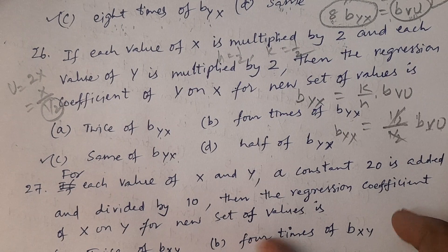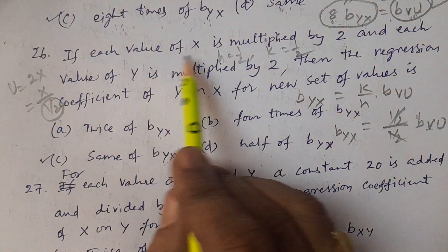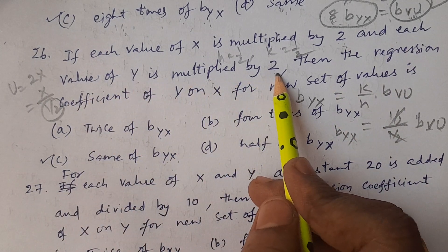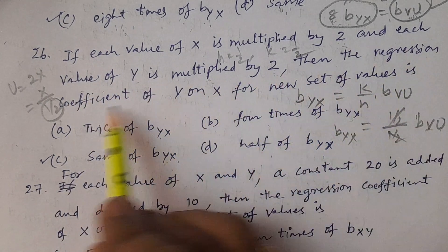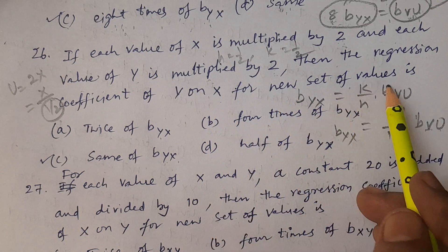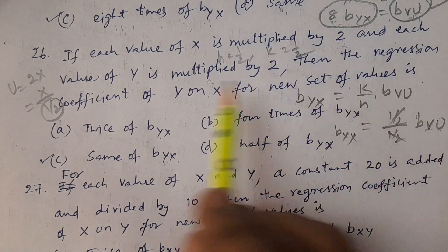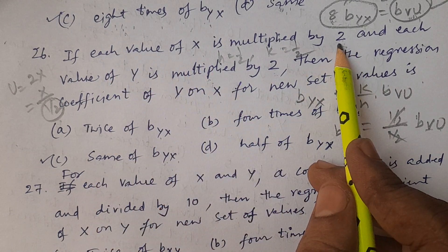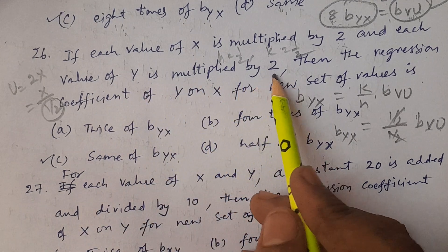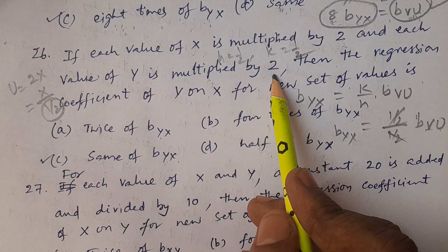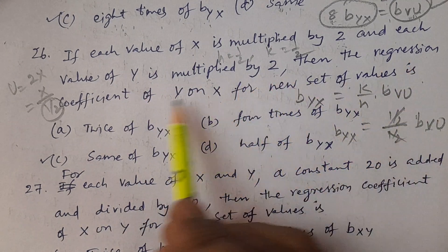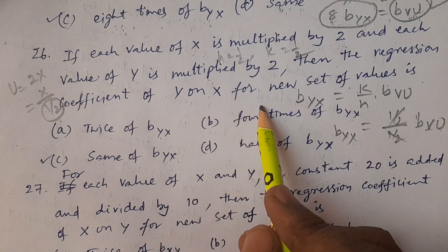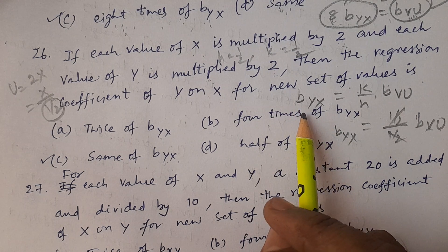Now, if each value of x is multiplied by 2 and each value of y is multiplied by 2, then the regression coefficient of y on x for the new set of values — this is the question.